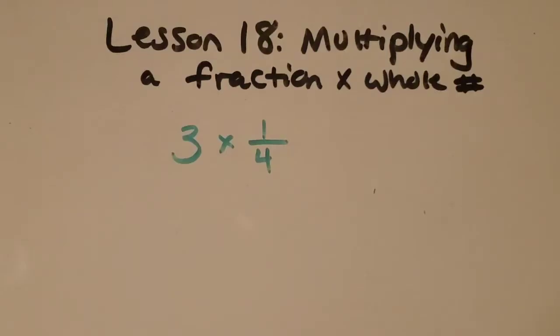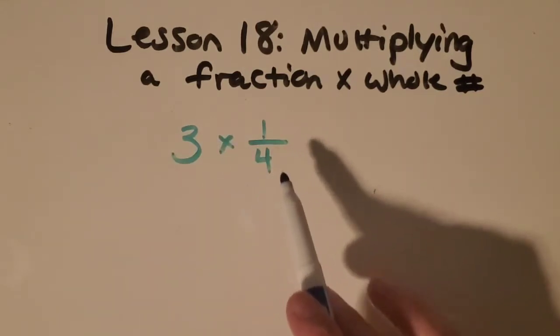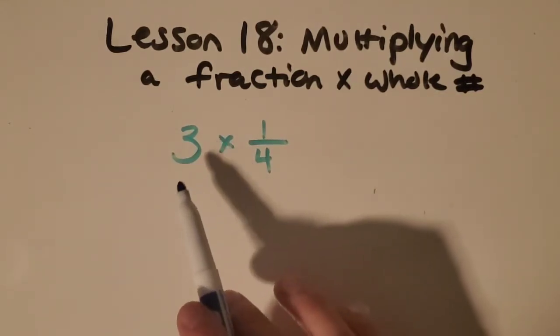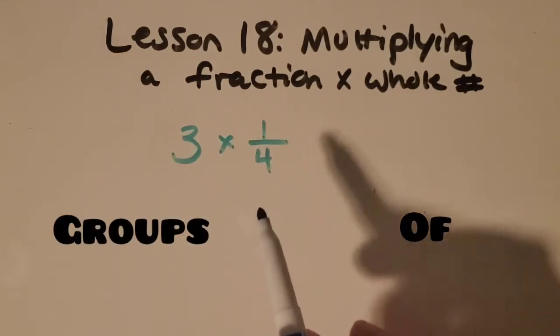Welcome back everyone! It's time for lesson 18, which is all about multiplying a fraction times a whole number. So I'm going to start this video off with a really easy example. I like to kind of start easy and then build my way up. So if I have three times one-fourth, I like to say it like this, three groups of one-fourth.